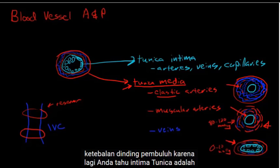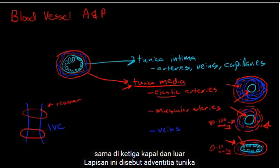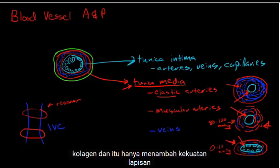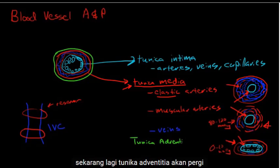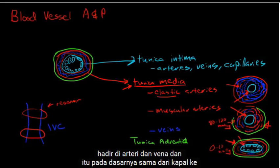The outer layer is called the tunica adventitia, and this is connective tissue — primarily collagen — that adds a strength layer. The tunica adventitia is present in arteries and veins and is essentially the same from vessel to vessel.